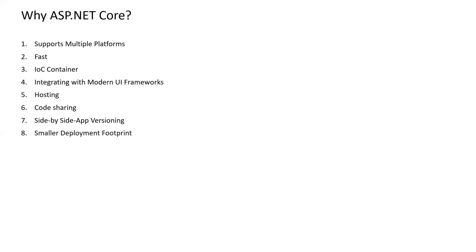Regarding code sharing: ASP.NET Core allows you to build a class library which can be used with other .NET frameworks such as .NET Framework 4.1, 4.2, 4.3, 4.5, Mono.NET. There is a single code base that can be shared across frameworks. So if you build a class library using ASP.NET Core, you can use that class on previous versions of .NET Framework. Also, side-by-side app versioning is supported in ASP.NET Core — you can install multiple versions and work on multiple applications simultaneously.